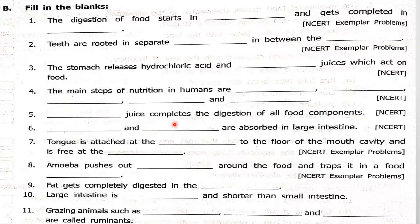Next question: the tongue is attached at the DASH to the floor of the mouth cavity and it is free at the DASH end. The tongue is attached at the back to the floor of the mouth cavity and is free at the front end. So the first answer is back and the second is front.